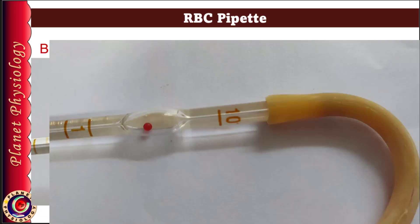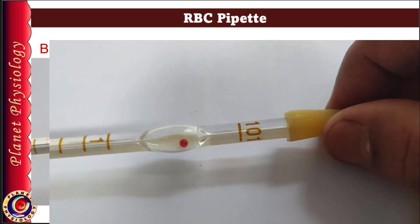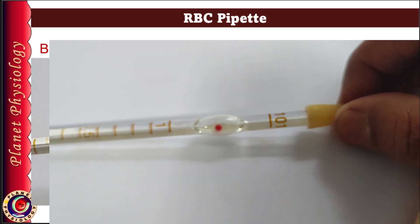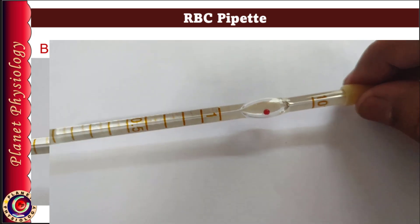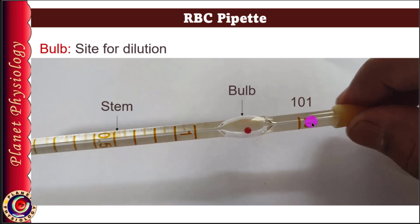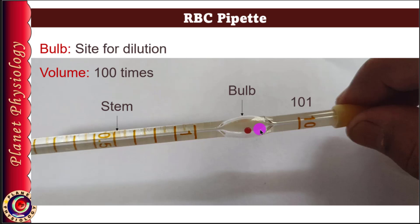Now let's take a closer look at the bulb. The lumen of the stem expands to form the bulb. It is thin-walled and narrows down on the other end to form a thick and short part similar to the stem. The bulb is the place where the blood sample is diluted. In the case of the RBC pipette, the volume of the bulb is 100 times that of the stem. This is evident from the numbers mentioned on the pipette: the marking at the beginning of the bulb is 1 and at the end of the bulb is 101, indicating the bulb holds 100 times the stem volume.